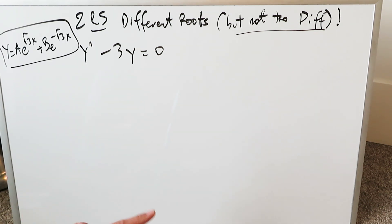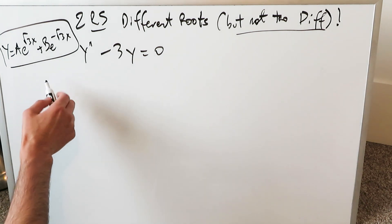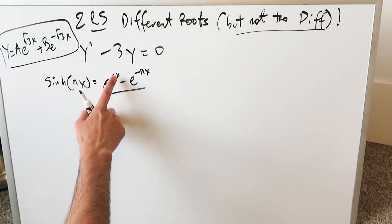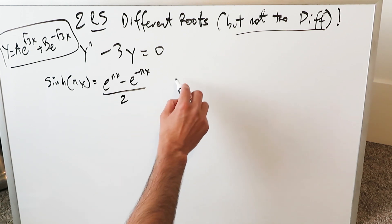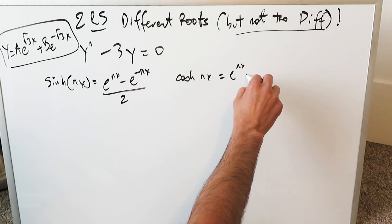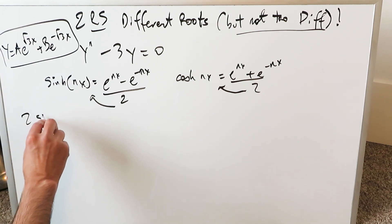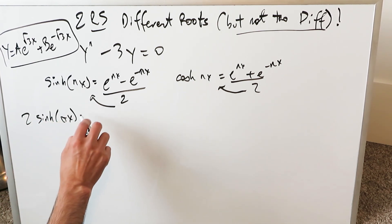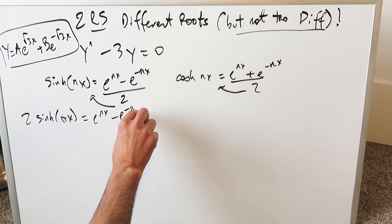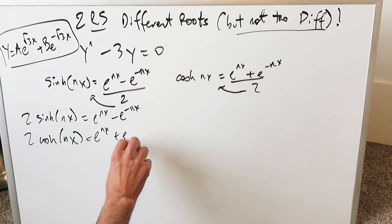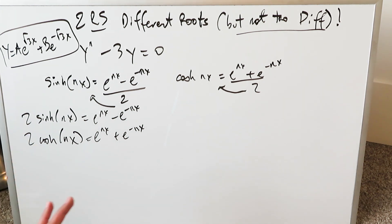So how is it that the original exponential answer can be presented in terms of hyperbolic sine and hyperbolic cosine? The remainder of the video will address that. The definition of hyperbolic sine of nx is e to the nx minus e to the minus nx over 2. Hyperbolic cosine of nx is e to the nx plus e to the minus nx over 2. Everything here is nothing too out of the ordinary.